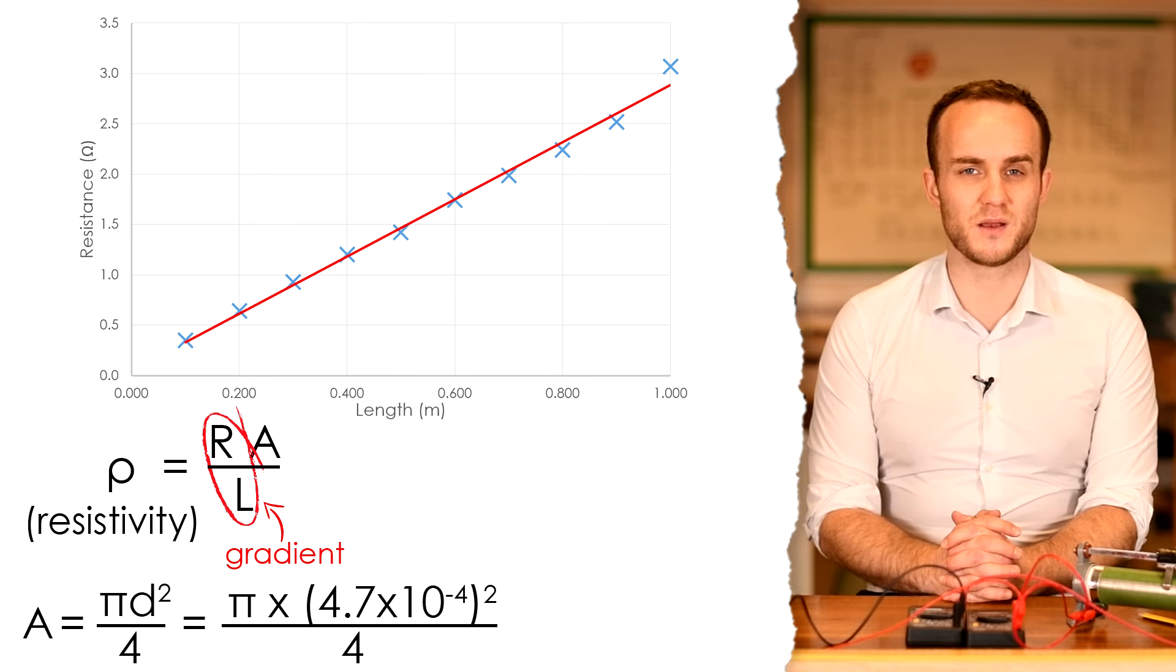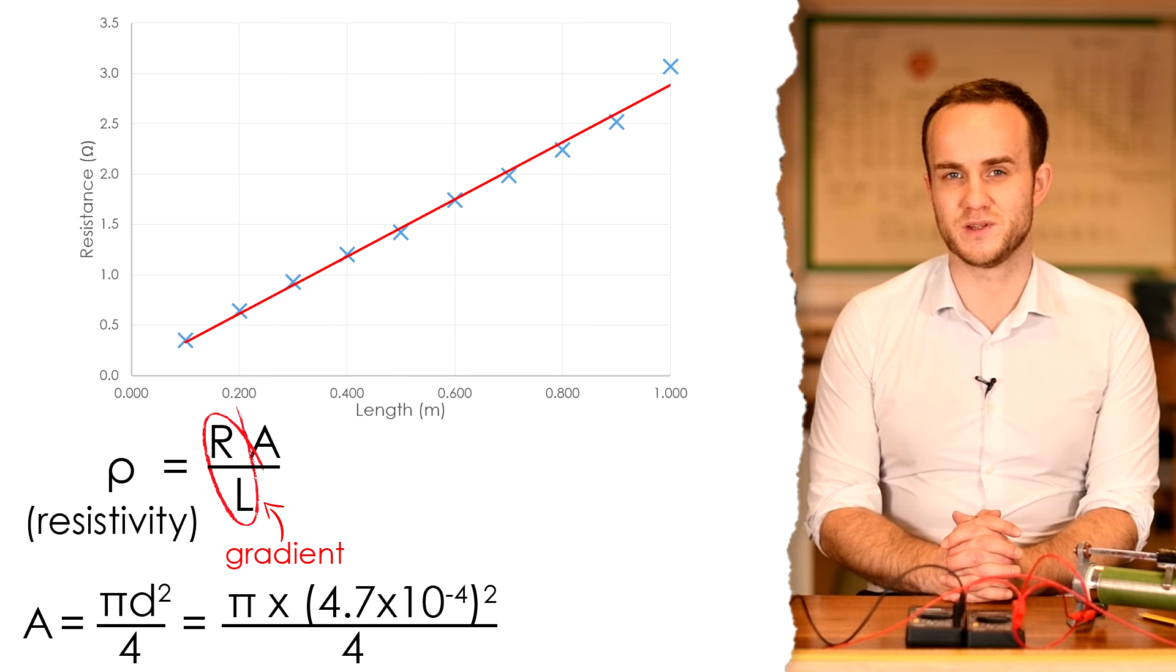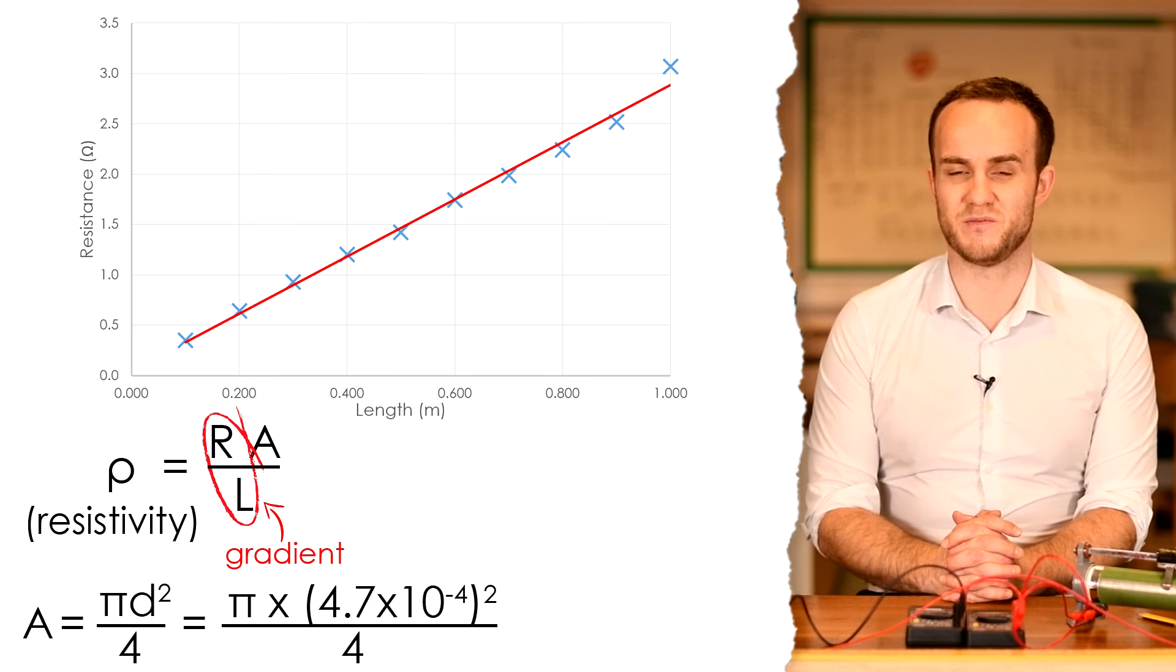So we're going to take pi times that by 4.7 times 10 to the minus 4 because it has to be in meters. That was 0.47 millimeters. Square that and then divide by 4. That gives us a cross-sectional area of 1.7 times 10 to the minus 7 meters squared.